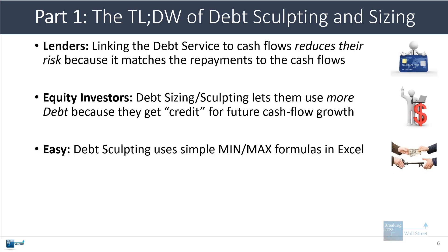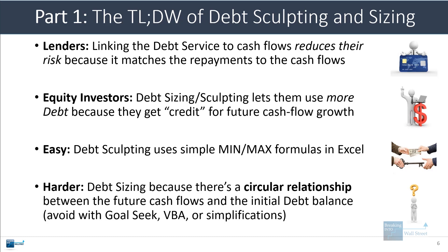Debt sculpting is pretty simple to set up — you can use a series of min-max formulas in Excel to do it, and we'll look at an example coming up. Debt sizing gets much harder because there's an inherent circular relationship between the future cash flows and the initial debt balance: the future cash flows depend on the interest paid on the debt and the tax deduction that comes from that, but that interest expense and tax deduction also depend on the initial debt balance. Luckily, you can solve it pretty easily whether you want to use Goal Seek, VBA, or some simplifications.